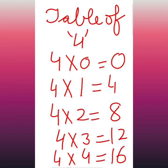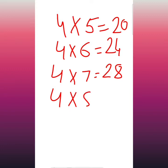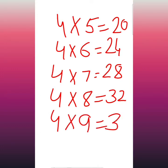4 4's are 60. 4 5's are 20. 4 6's are 24. 4 7's are 28. 4 8's are 32. 4 9's are 36. 4 10's are 40. Okay beta, understood?